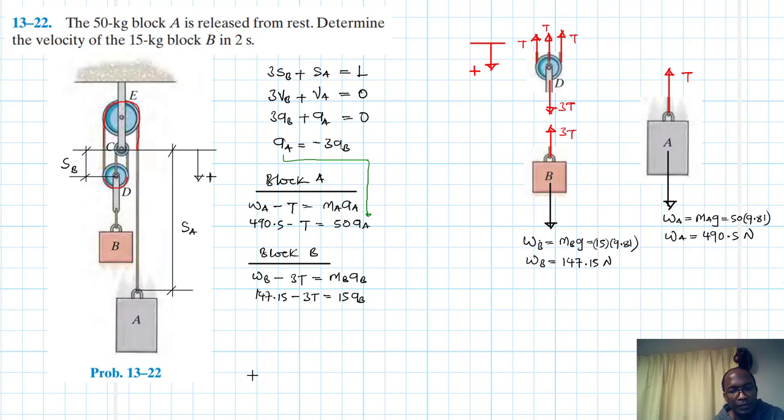Let's plug in this value here. Let's plug in this value there. If we do so, then we are going to have 490.5 minus T equals minus 150AB.